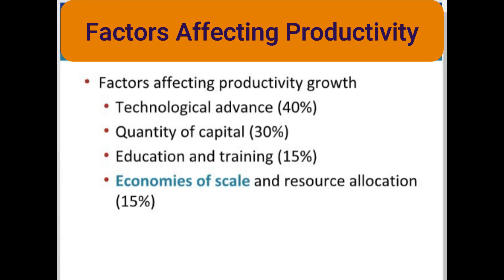Investment in human capital is an important means of increasing labor productivity. By 2012, 88% of the U.S. population had at least a high school education, and 31% had a college or post-secondary education, both representing substantial increases over the past several decades. Economies of scale are the reductions in per-unit production costs that result from increases in output levels. Improved resource allocation means workers, over time, have moved from low-productivity employment to high-productivity employment. The long-run movement toward liberalized international trade has improved the allocation of resources, increased labor productivity, and expanded real output both domestically and abroad.